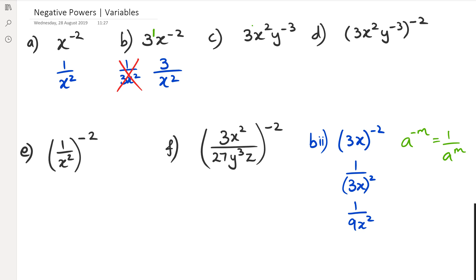Let's go to question C. 3 has a positive power, so I'm not going to touch it. x squared is positive, so the only thing is y is negative 3. So I'm going to rewrite this as 3x squared over y cubed. And that's it, you can't do anything further.